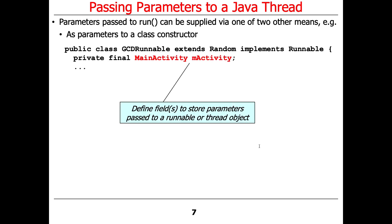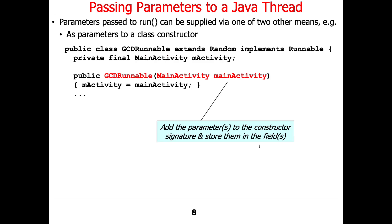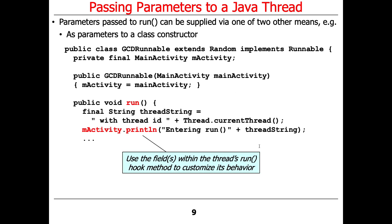This example is from the GCD case study program we looked at before. It's going to have a field called MainActivity, which is an Android-ism we need to get the buttons to work properly. Then we have a constructor which is passed an activity, and that gets stored in the field. That's one of the jobs of the constructor — to initialize the fields. When the run method gets called and we start the instance of the thread running the GCD runnable, it can then access the MainActivity that was passed into the constructor. In this case, it uses it to print diagnostic messages to the user.